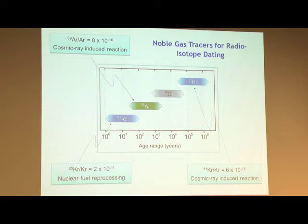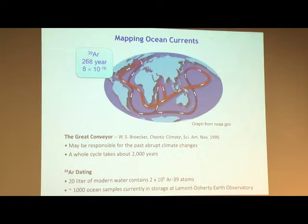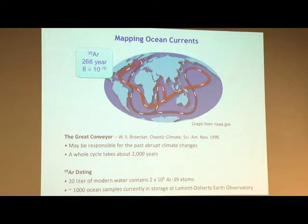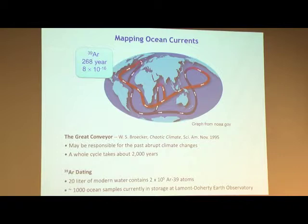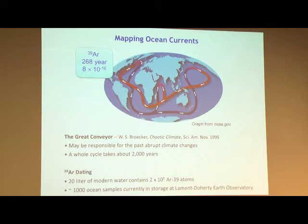Finally, let me tell you about argon-39. Its half-life is 268 years — just right to study ocean circulation. Ocean water circulates with a cycle time of around 2,000 years, previously mapped with carbon-14, but carbon-14's 5,730-year half-life is a bit too long. Oceanographers want a shorter-lived isotope around this number to complement radiocarbon dating. Argon-39 is ideal — they've been waiting for it for decades. The challenge is its isotopic abundance at 10⁻¹⁶ — remember, krypton-81 was at 10⁻¹², so this is a thousand times more difficult.